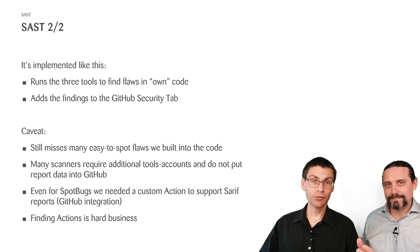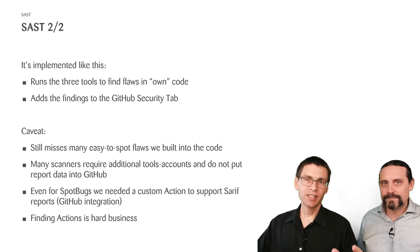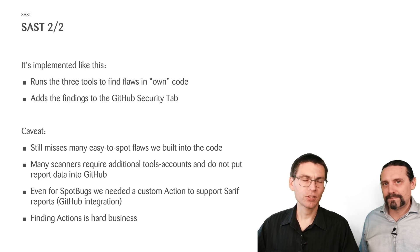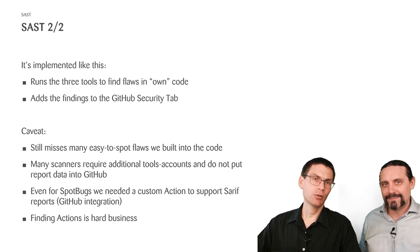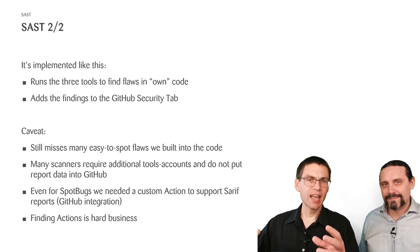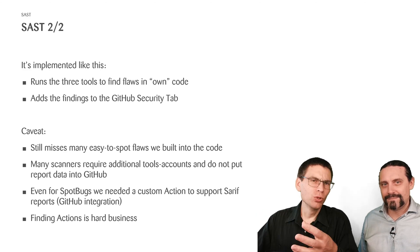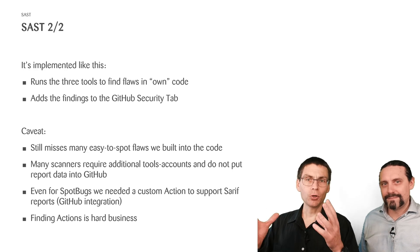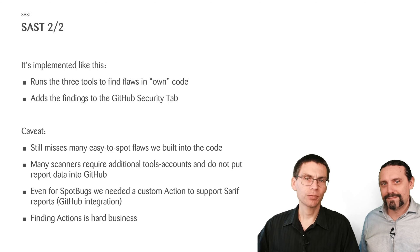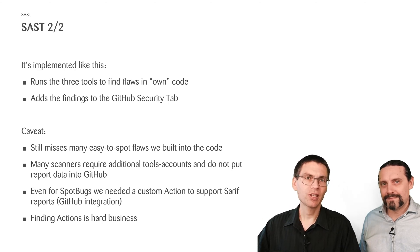So we chose in the end these three tools to cover as much as possible. Yet still, we miss many easy-to-spot flaws which we used to find on other platforms. However, we also identified one flaw we did find on this platform but not in others: many scanners provided out there need additional tool-specific accounts and do not put report data directly into the GitHub security tab. Even for SpotBugs, we needed a custom action, and we got support from a friend at Microsoft who helped us exchange the format into the SARIF format.